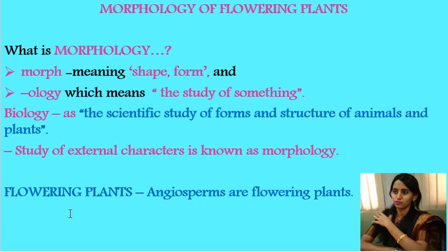Then, what are flowering plants? Dear students, the kingdom Plantae, which you might have studied in your previous class, includes algae, bryophytes, pteridophytes, gymnosperms and angiosperms. Of these, algae, bryophytes, pteridophytes and gymnosperms do not produce flowers. Whereas the group of plants called angiosperms produce flowers, which are the reproductive structures. Hence, angiosperms are known as flowering plants.